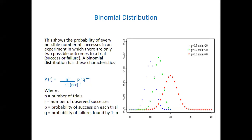For example, if you are talking about prevalence of hypertension in the community, the sample size is n. The people that are hypertensive - the number that are hypertensive - that will be r. The probability of success on each trial is p. Out of the sample size, the number that have hypertension is r, but the probability is the probability of success on each trial.